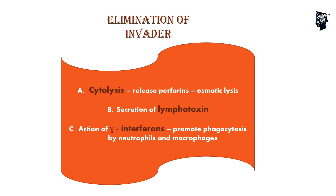Next is secretion of lymphotoxins — lymphotoxins are toxic substances secreted onto the pathogen, causing its destruction. Third is action of gamma interferons — gamma interferons promote phagocytosis by neutrophils and macrophages, thus helping in the destruction of pathogens. So the three processes of elimination are cytolysis, secretion of lymphotoxins, and action of gamma interferons.